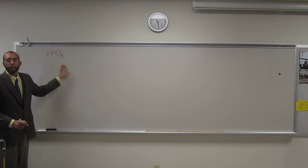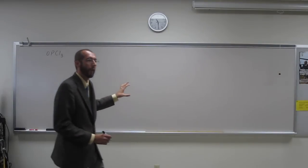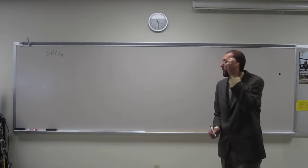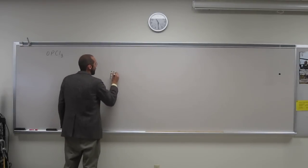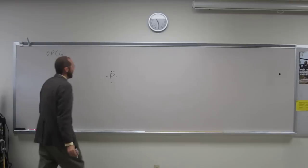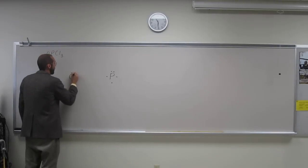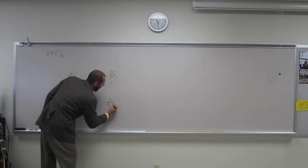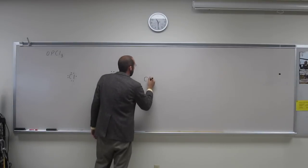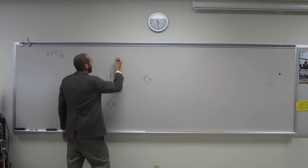So if you looked at this, hopefully you would think the phosphorus should be the central atom. Okay, because it's period three or below and it can expand its basis. So when we do that, draw a phosphorus Lewis structure and then draw your three chlorines. And then your oxygen here.